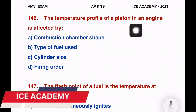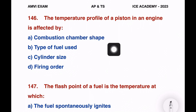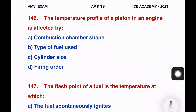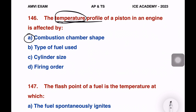The temperature profile of the piston in an engine is affected by combustion chamber shape, type of fuel used, cylinder size, and firing order. The question asks what is not the temperature profile. If there is a section — compression, expansion, exhaust, and temperature variation — it depends on the type of fuel and combustion chamber. So option number A is the right answer. If there is only temperature, it depends on the type of fuel.